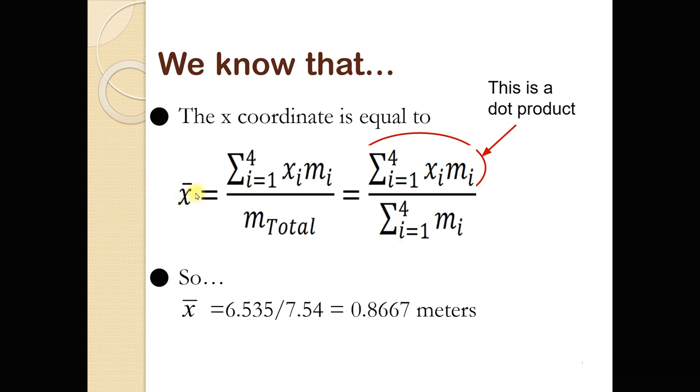So let me walk you through this from left to right. x bar on the left here is our x coordinate of the center of mass, and it equals this fraction. And in the numerator of this fraction, we have our dot product. You can see it's circled right there on the right. Our dot product is going to be the sum from 1 through 4, because we have four components, so the first component, the second, the third, the fourth.